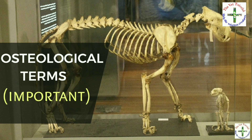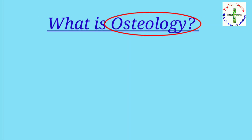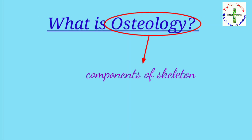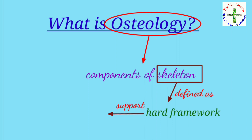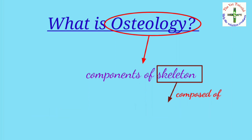So let's first see what is osteology. Osteology deals with the components of skeletons. Skeleton can be defined as a hard framework of the body which supports soft structures. It is composed of bones, cartilage, and ligaments.